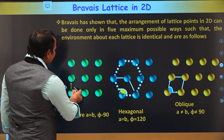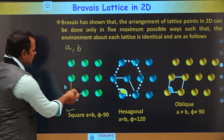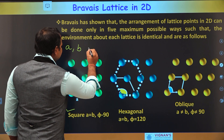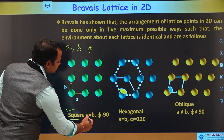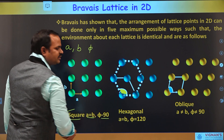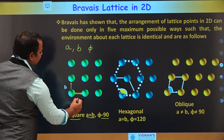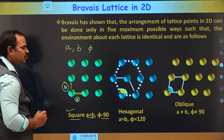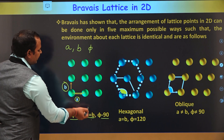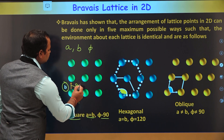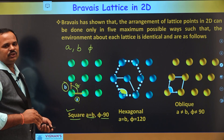In two dimensions, we only have two lattice parameters: A and B, and the angle between them, simply phi. The first is the square lattice, in which A is equal to B and the angle between them is 90 degrees. You can see the distance between two atoms in one direction is A and in the other direction is B, where A equals B and the angle is 90 degrees. This is a square lattice — one possible way to arrange points in two-dimensional space.